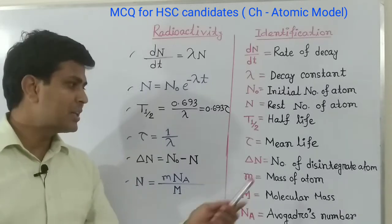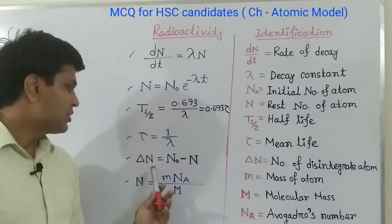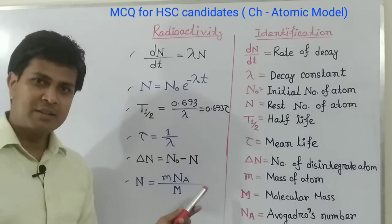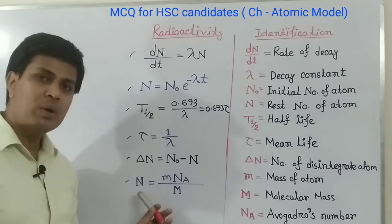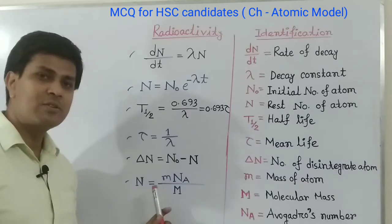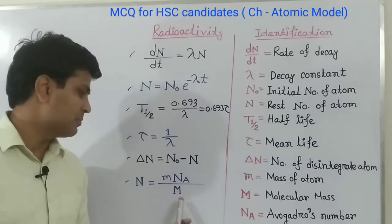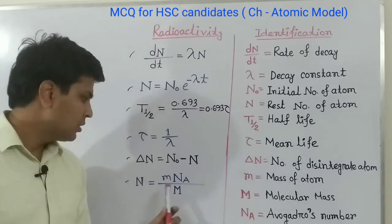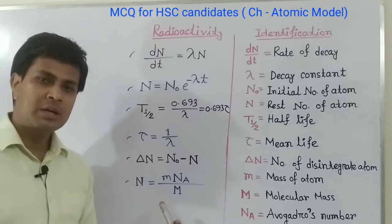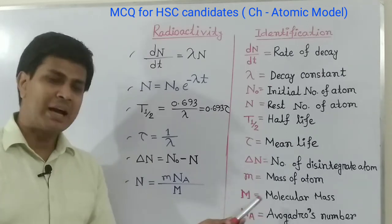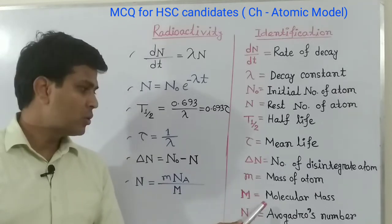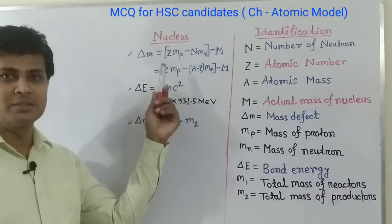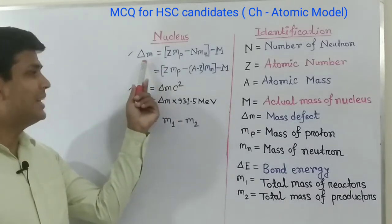Instead of 1 by lambda we can write tau, because tau equals to 1 by lambda, where tau is the mean life. The next formula to calculate the number of disintegrated atoms is delta N equals to N naught minus N. The last formula to calculate the rest number of atoms is N equals to (small m divided by capital M) into N_A, where small m is the mass of the sample, capital M is the molecular mass, and N_A is Avogadro's number.